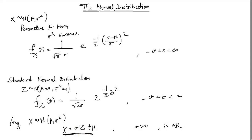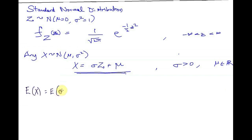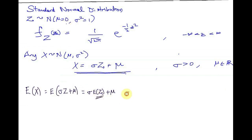The expected value of X is equal to the expected value of sigma Z plus mu, which is equal to sigma times the expected value of Z plus mu. Since Z is the standard normal, its expected value is 0. Therefore, the expectation of X is mu.